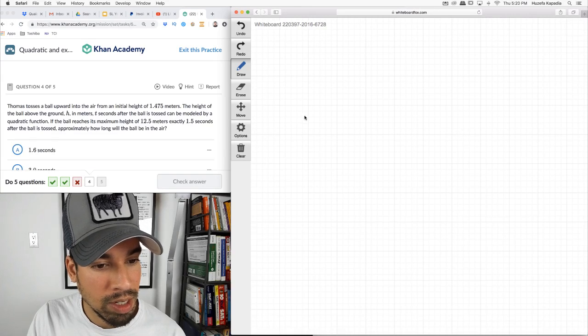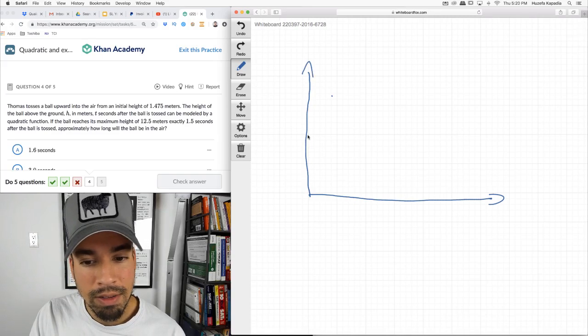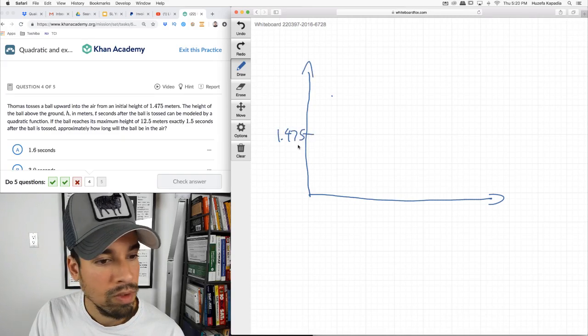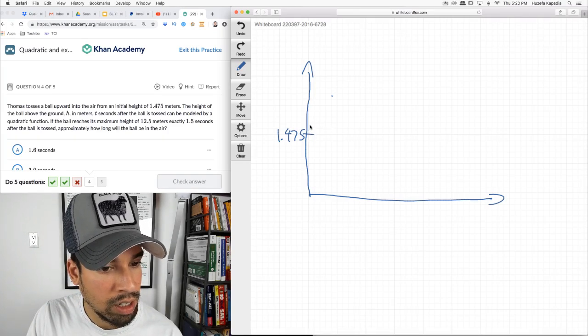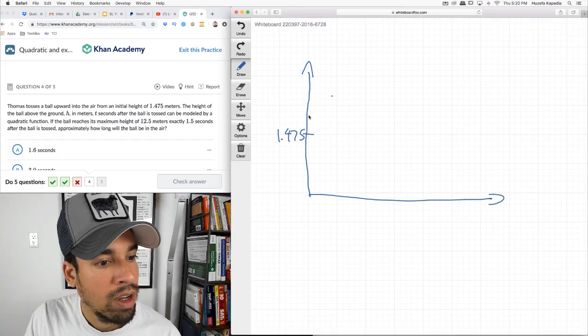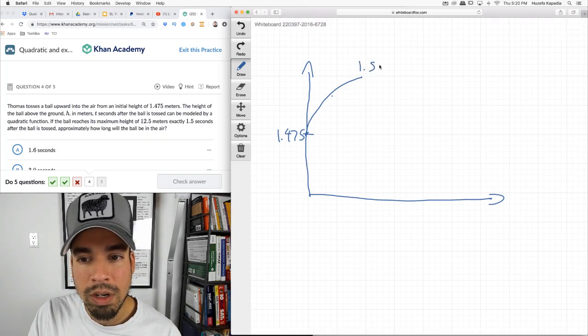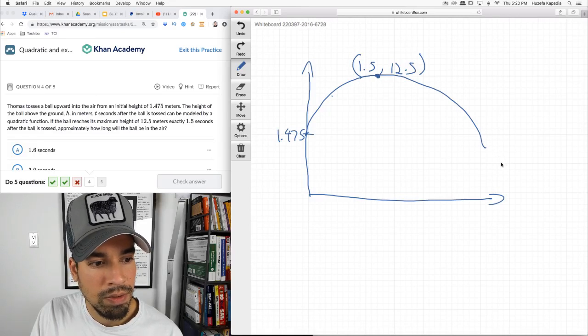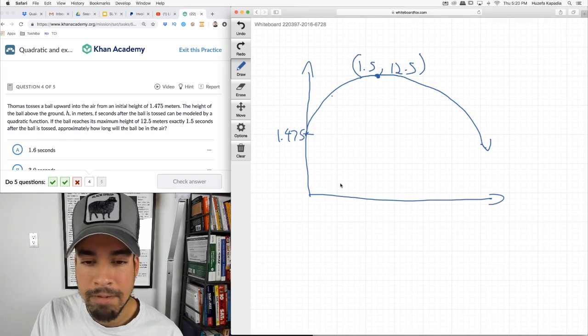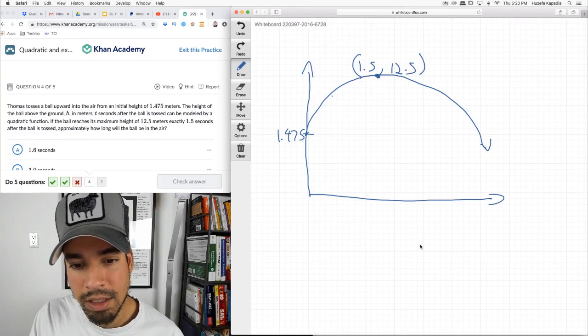Thomas tosses a ball upward into the air from an initial height of 1.475. The height of the ball above the ground, H in meters, T seconds after the ball is tossed, can be modeled by a quadratic. Function reaches its maximum at 1.5 seconds, 12.5 meters. Approximately how long will the ball be in the air? So we're going to actually have to create a quadratic. And this is a calculator section.